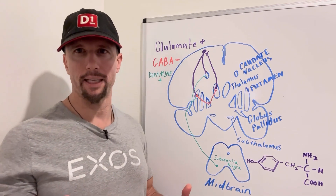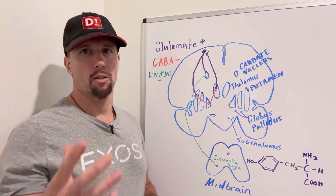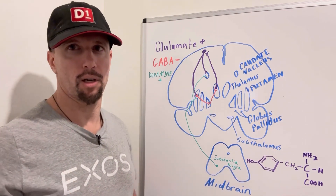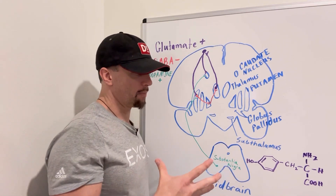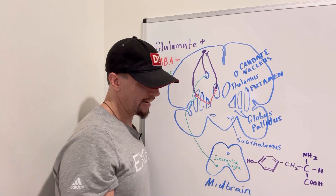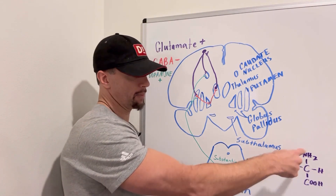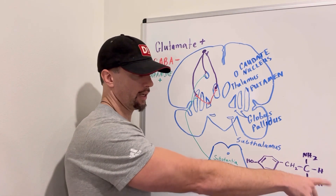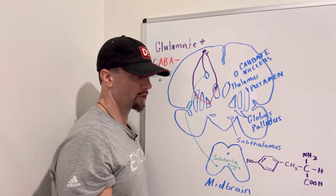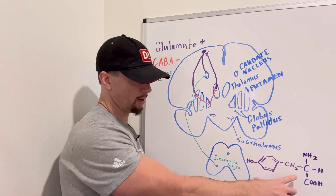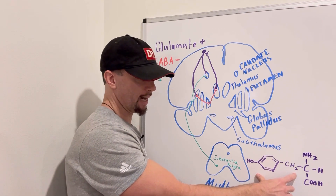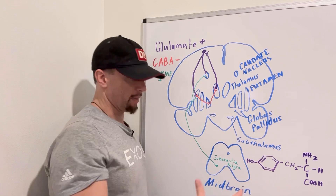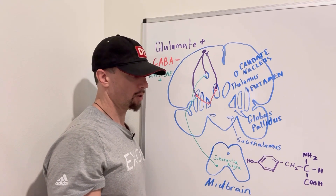Dopamine is a monoamine neurotransmitter, also categorized as a catecholamine. The process starts with the amino acid tyrosine — which has an amino group, a carboxylic acid group, a methylene group, a benzene ring, and a hydroxyl group as its R group. One step up from tyrosine is a molecule known as L-DOPA, produced when the enzyme tyrosine hydroxylase adds a hydroxyl group to tyrosine.